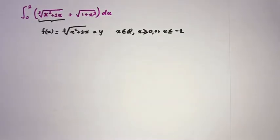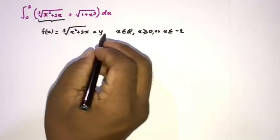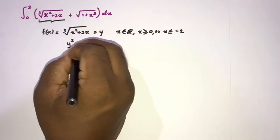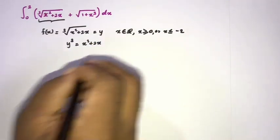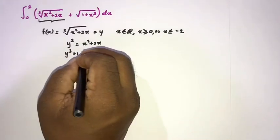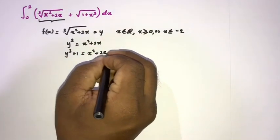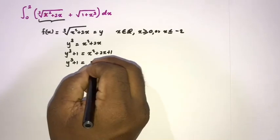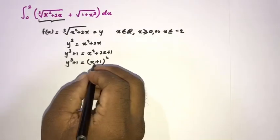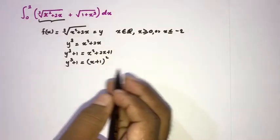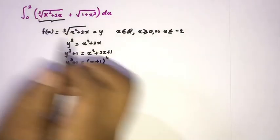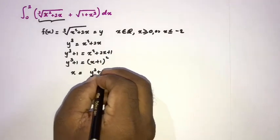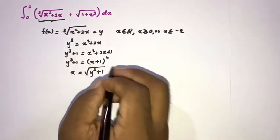If we take the third power of both sides, we can write y³ equals x² plus 2x. Then adding 1 to both sides gives y³ plus 1 equals x² plus 2x plus 1. We know that equals (x+1)², so x plus 1 equals the square root of y³ plus 1. Also, given our limits from 0 to 2, we can write x equals the square root of y³ plus 1, minus 1.